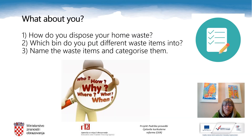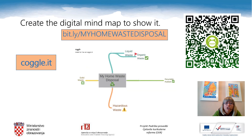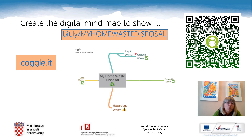What about you — how do you dispose of your home waste? Which bin do you put different waste items into? Name the waste items and categorize them. To show your answers, use the digital mind map tool Coggle. The link is in the upper left corner — copy it into your browser and try to be very creative. I'm 100% sure you're going to be much more creative than I was while creating this one.